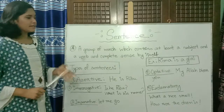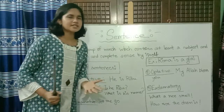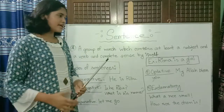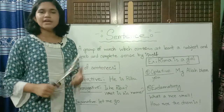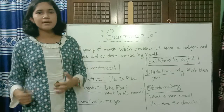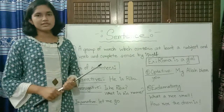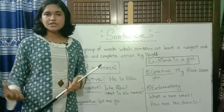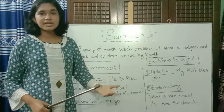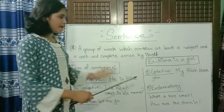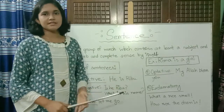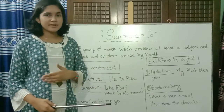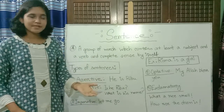Next is the optative sentence. We say these in our lives when wishing someone well, like 'May Allah bless you' or 'May you live long.' This means you are wishing the person good things for the future. Praying or wishing for a person's wellbeing is called an optative sentence.